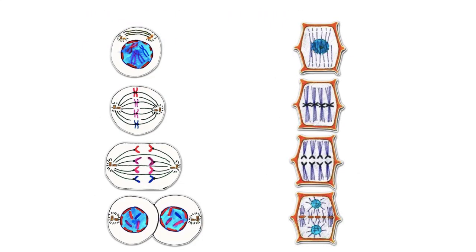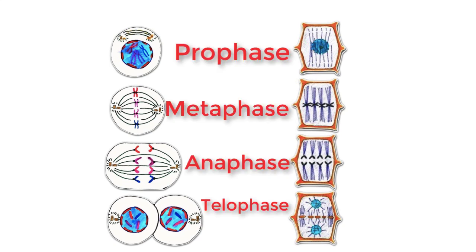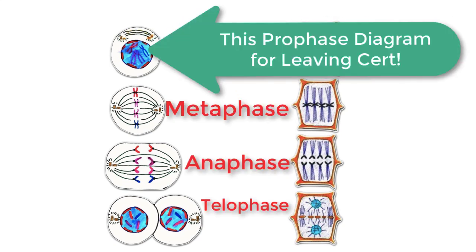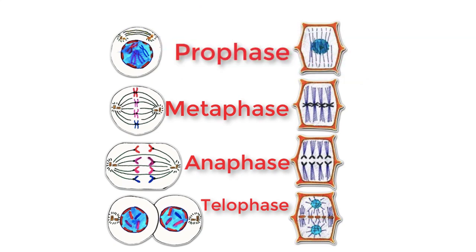So that was mitosis. The most important thing is that you know the four stages: Prophase, Metaphase, Anaphase, and Telophase — 'PIPA must always talk'. Make sure you can label the diagrams and give a few points on each of those stages.